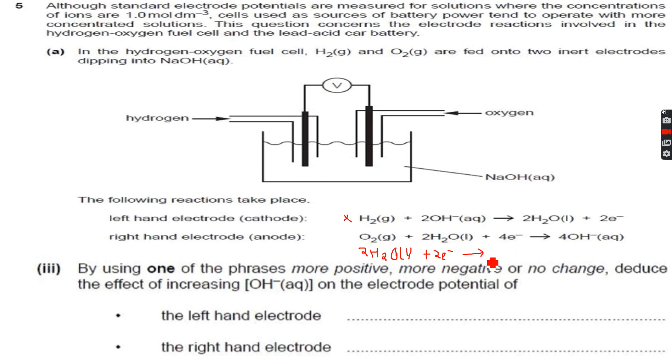What was this? It was H2 gas plus 2 OH negative. This was plus 0.4, this was minus 0.83 volts, so this is fine.